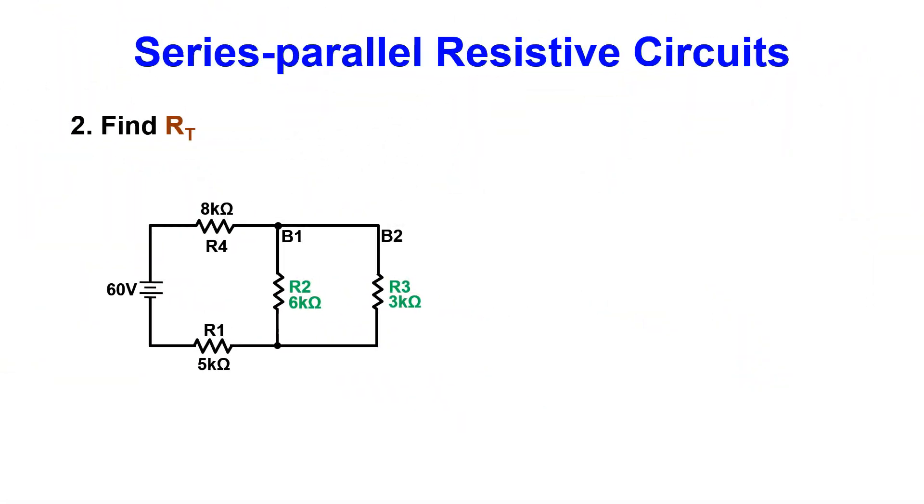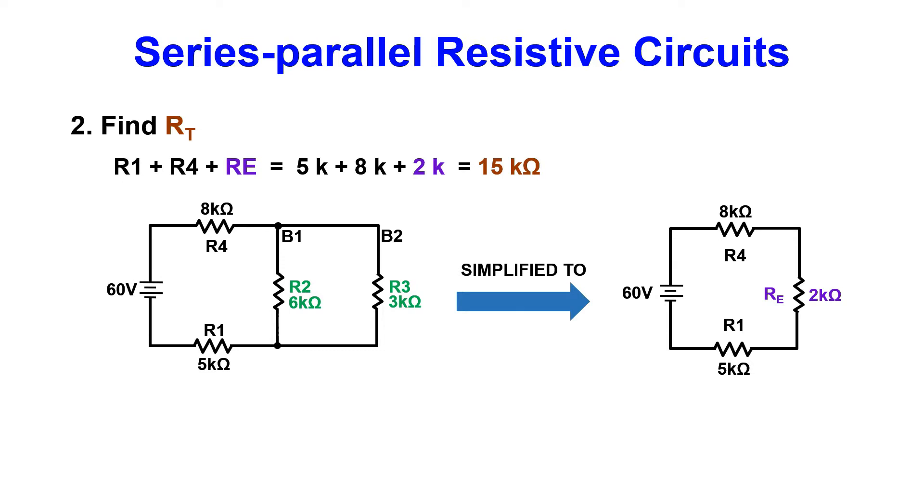The next step is going to be finding RT. In order to find RT, we have to add our series resistors to the RE value. This gives us 15k for RT. We can utilize Ohm's law to find total current. Applied voltage divided by RT, or 60 volts divided by 15k gives us a total current of 4 milliamps.